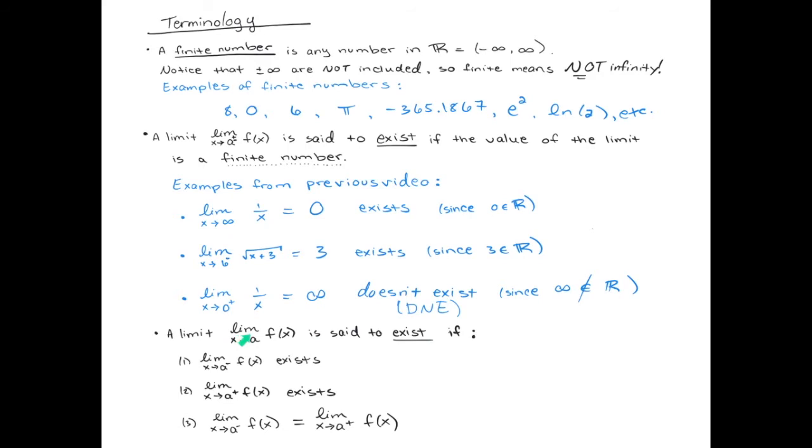So while it seems like a very innocent type of statement, this limit exists. Really, there's a lot built into that. If there's no plus or minus, there's three different things that this limit existing is saying. It's saying that the left one exists and the right one exists and they have to be equal to each other as well. It's a lot of terminology built into one simple statement.